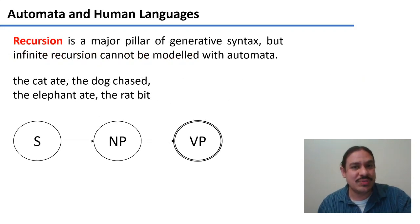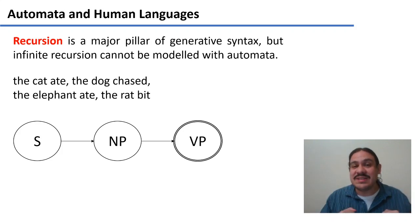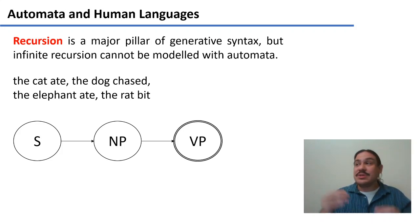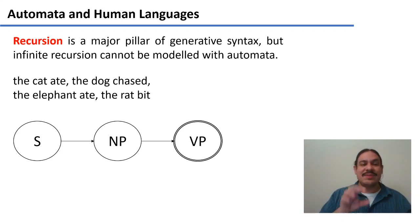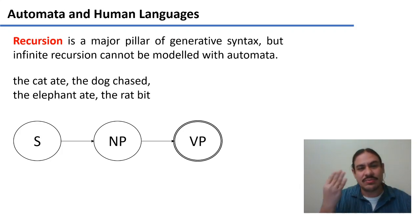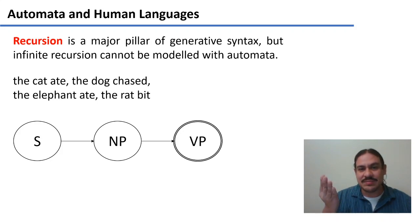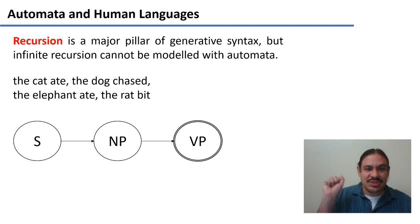These structures are possible because of recursion, which is a major pillar of contemporary theories of human syntax. There's really no way to model recursion with finite state machines because it would need to be an infinite finite state machine. We can have a very simple one for 'the cat ate,' 'the dog chased,' 'the elephant ate,' 'the rat bit' — with S for sentence, NP for noun phrase (the cat, the dog, the elephant, the rabbit), and VP for verb phrase (ate, chased, ate, bit). This finite state machine can model these four sentences.